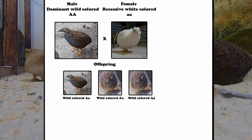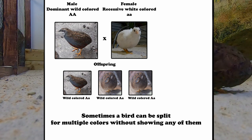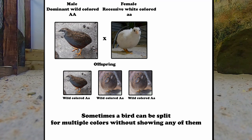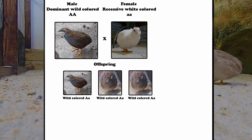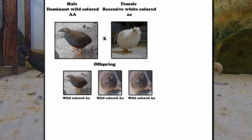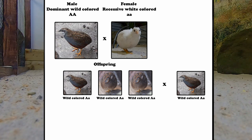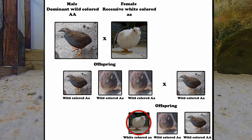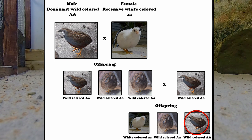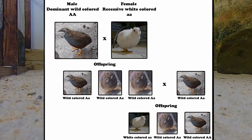A recessive color — shown by a lowercase 'a' — means either parent can pass on the color gene, but only offspring that inherit the same color gene from both parents will visually show it. So if a quail that is not showing but is carrying the gene breeds with a partner also carrying that gene, their offspring can have the recessive color. However, offspring could also still be wild colored — only carrying the gene — or even only carrying the dominant gene, meaning no white offspring are possible if the white gene isn't present in both parents.